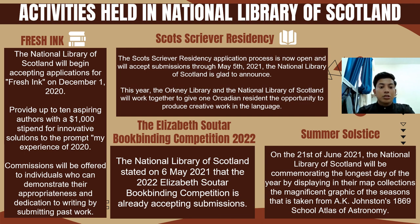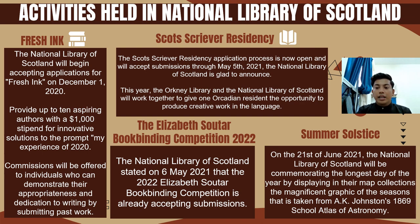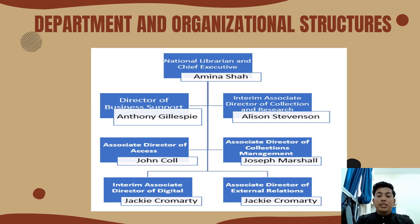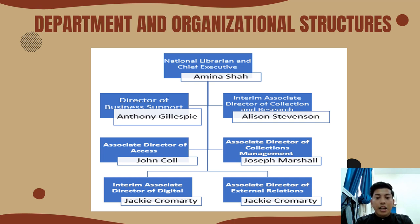The last activity is Summer Solstice Activities. On 21st June 2021, the National Library of Scotland commemorated the longest day of the year by displaying its India map collection — a magnificent graphic of the season taken from A.K. Johnston's 1869 School Atlas of Astronomy. The organizational structure of the NLS includes the National Librarian and Chief Executive, Director of Business Support, Associate Director of Collection Research, Associate Director of Access, Associate Director of Collection Management, Associate Director of Digital, and Associate Director of External Relations.